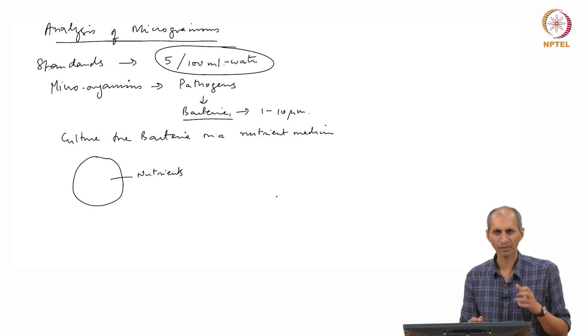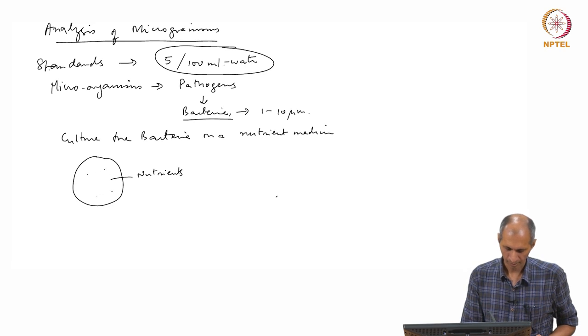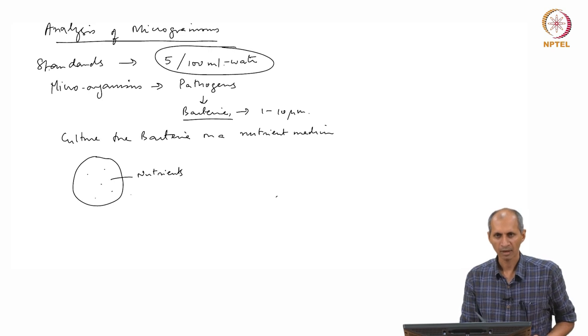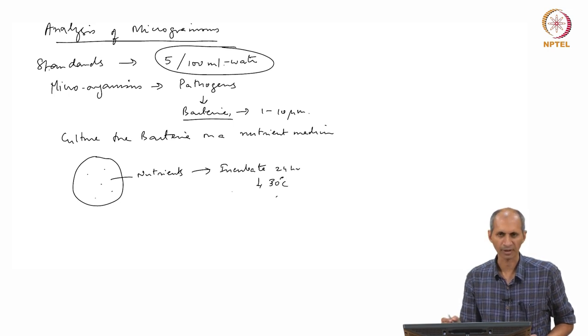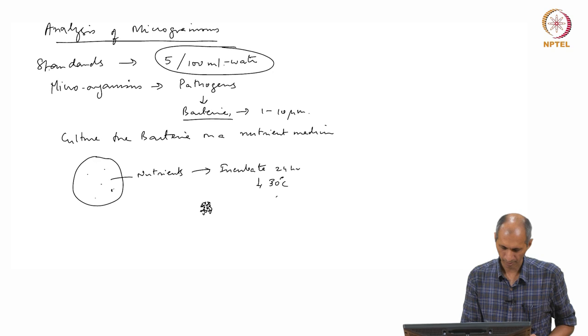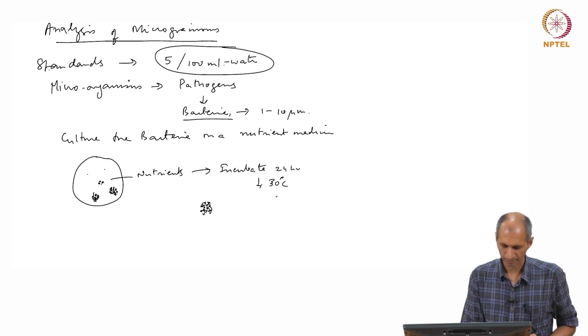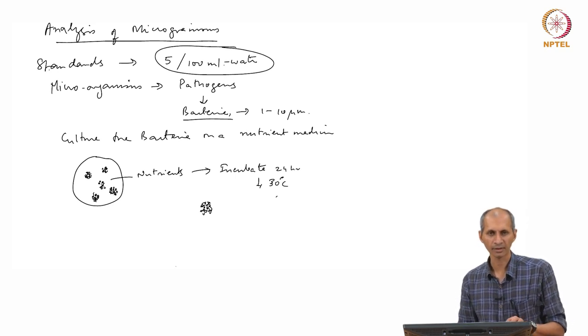What people do is they take say 1 ml of water sample and put it on a nutrient medium. There are say 5 bacteria and you cannot see it because it is micron size. Then you incubate it for 24 hours at some temperature, say 30 degrees centigrade or 25 degrees centigrade. They allow the bacteria to multiply. The bacteria multiplies and becomes a small cluster.